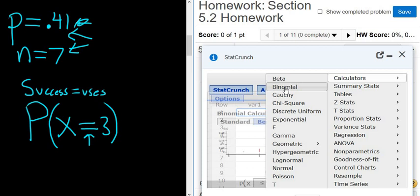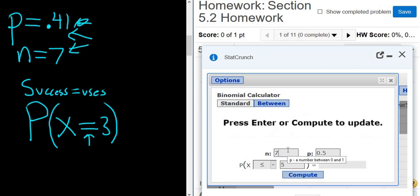Then you have this beautiful table. So n here is seven. We said p was 0.41. Then here you have the P, you have the x. So you have to change this to equals, and then put a three here. So P of x equals three. Everything looks okay. We have our n, we have our p.